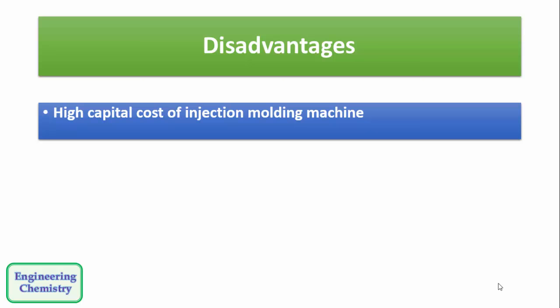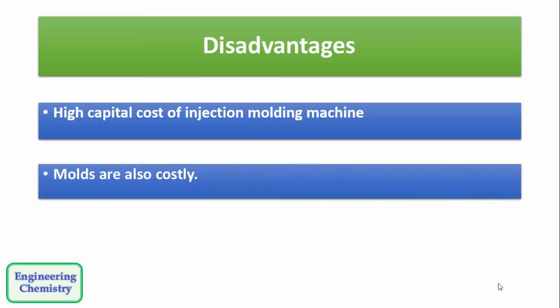The first is high capital cost of injection molding machine. And the second is molds are also very costly. However this method is widely used for the production of materials which are having complex shapes.